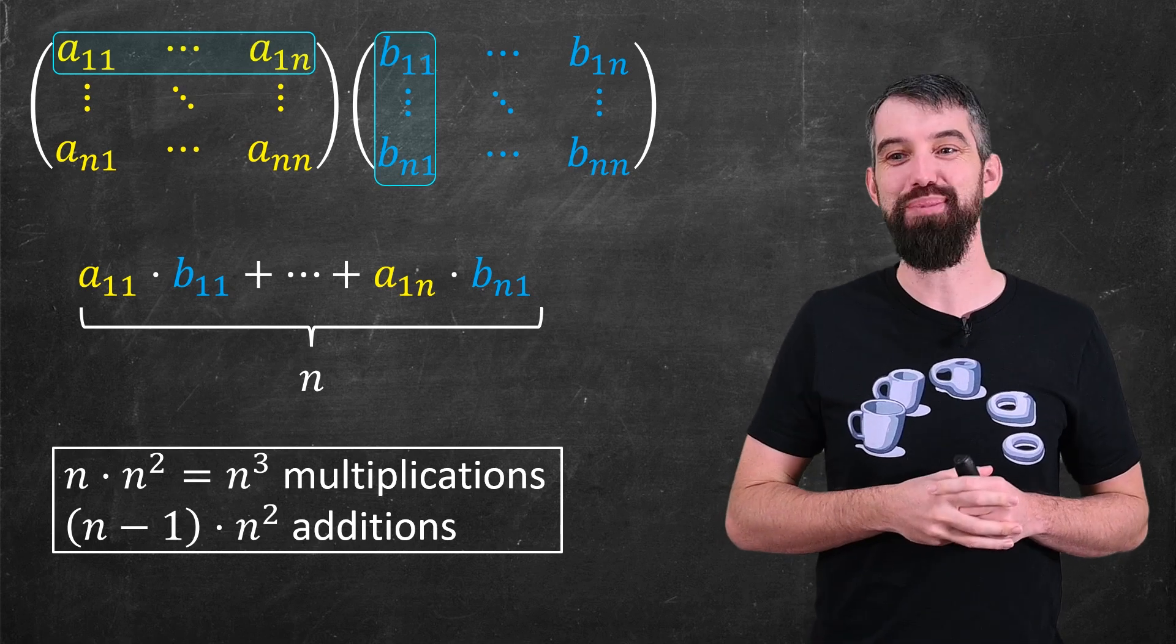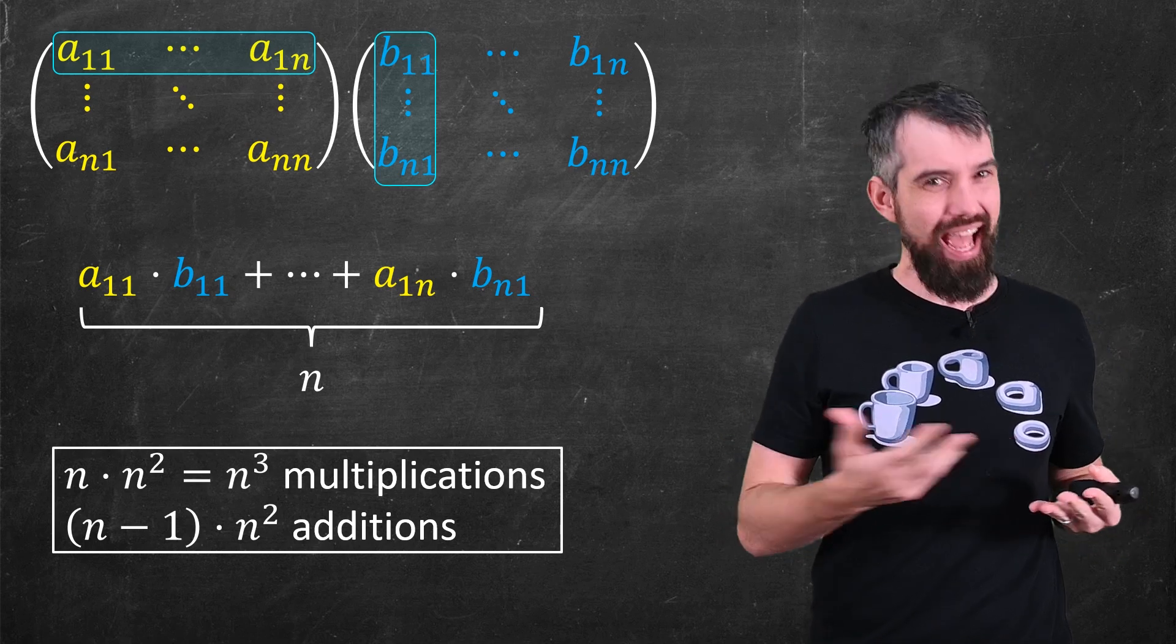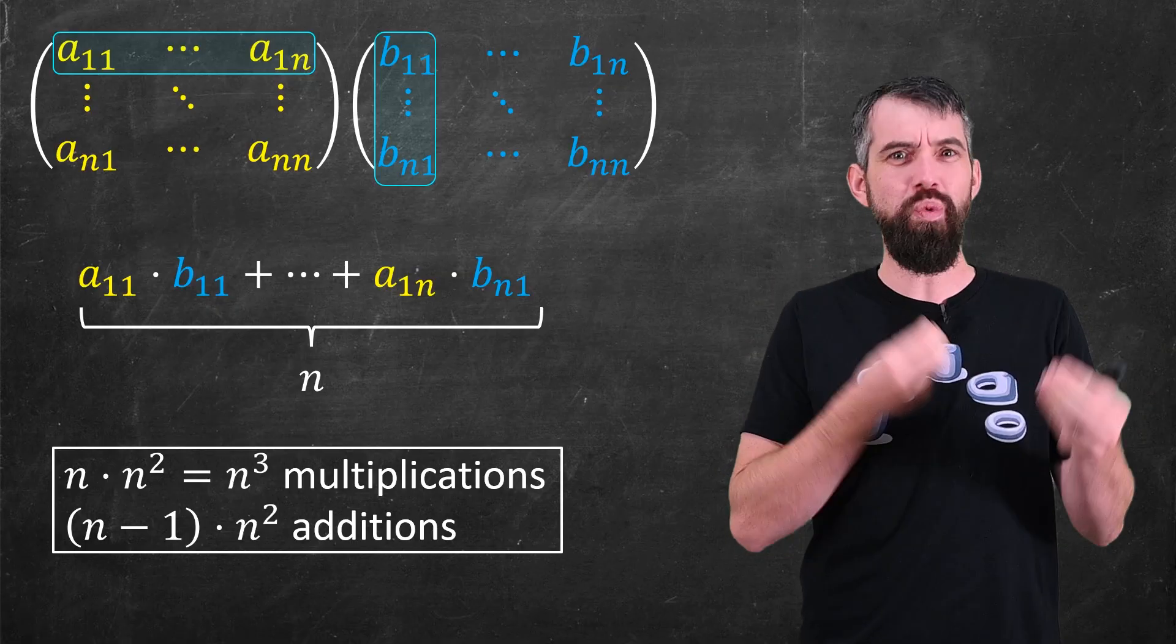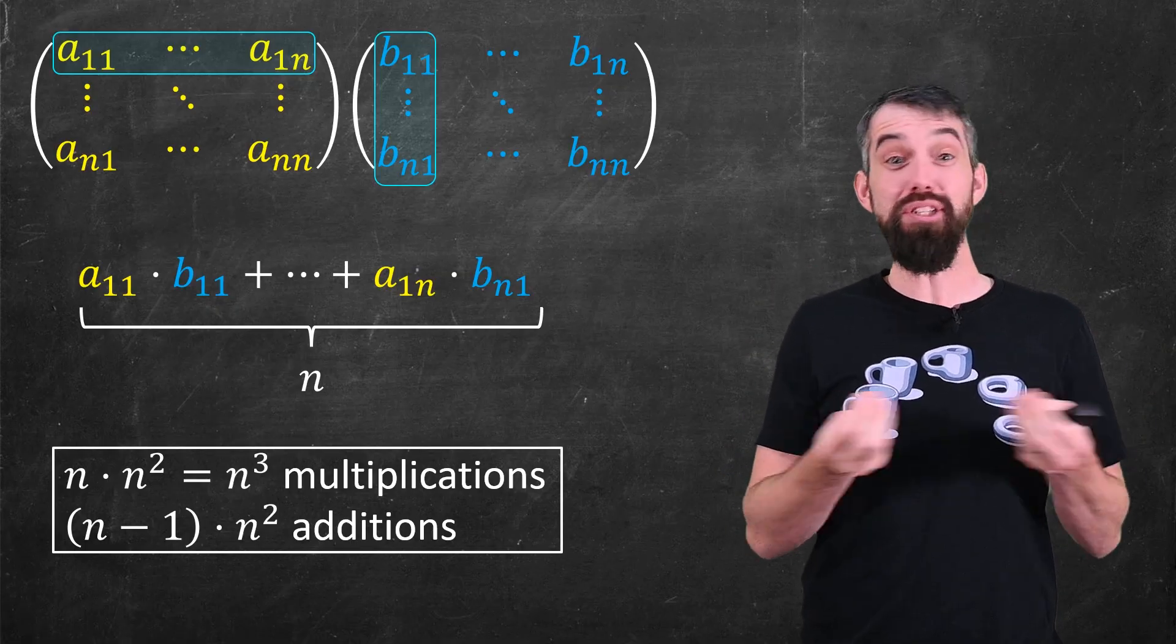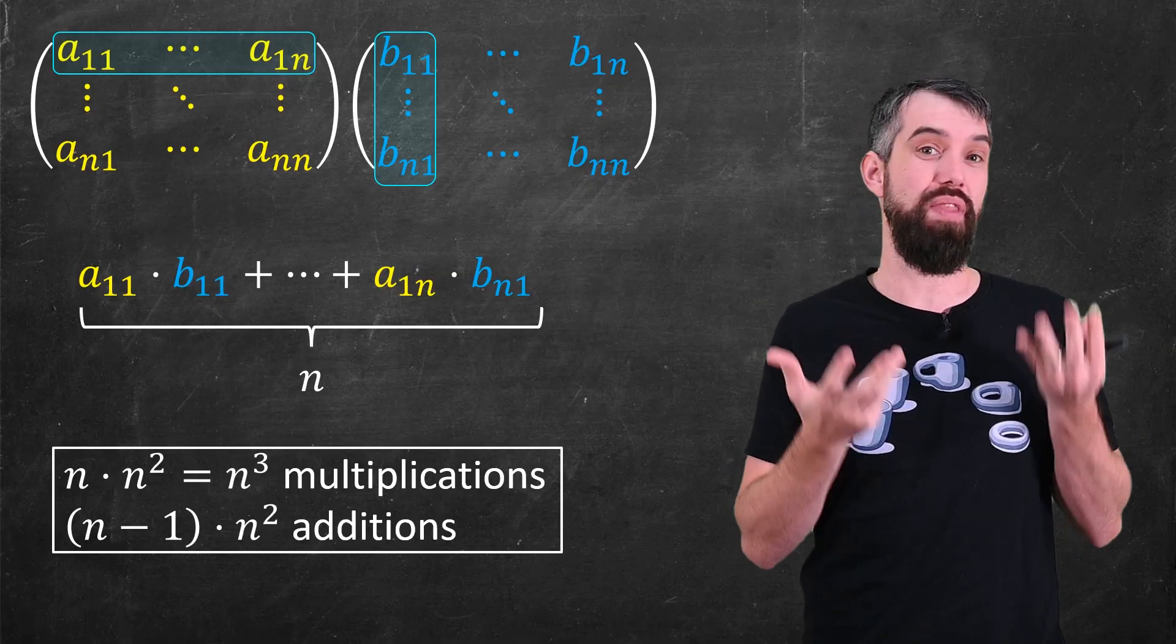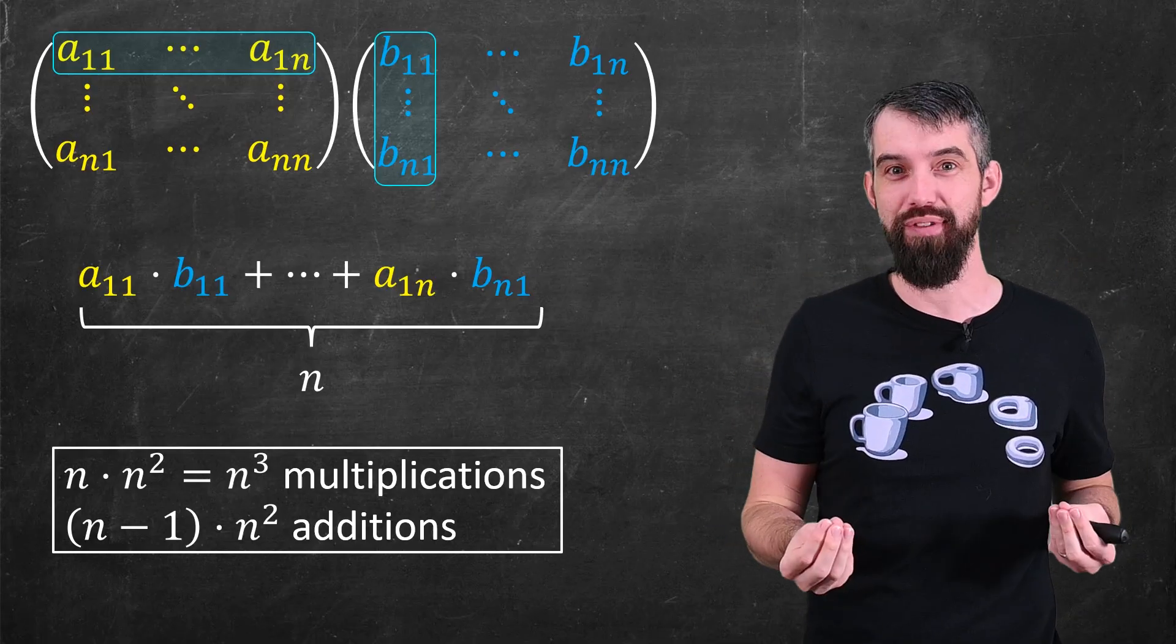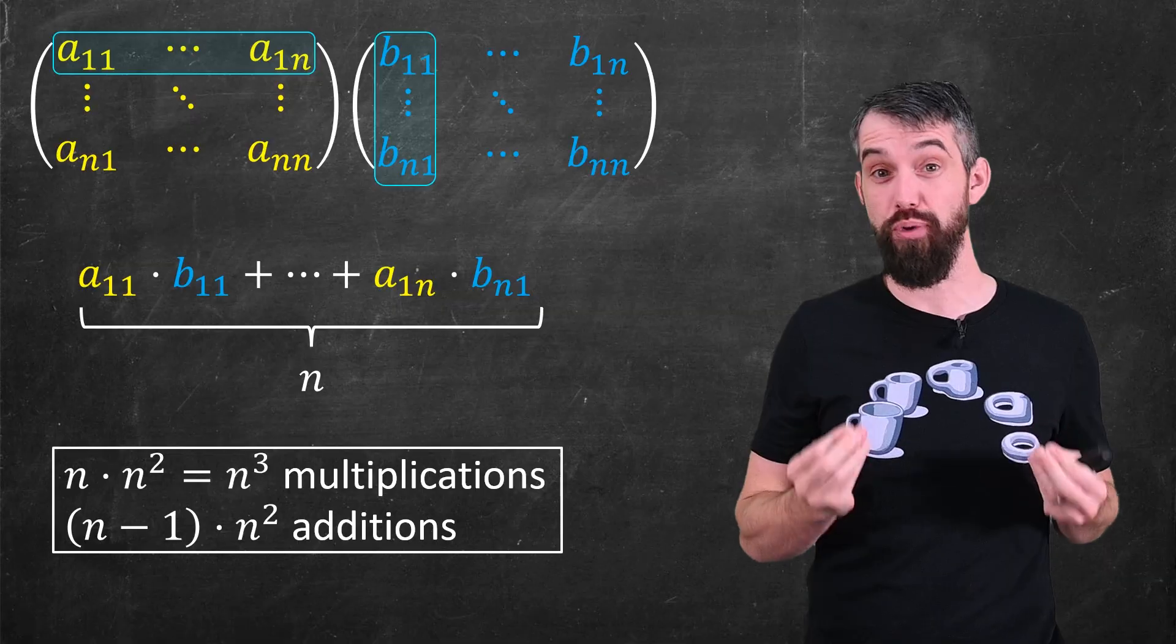I also get n minus 1 times n squared additions, but I'm going to care a lot less about additions, because for really large numbers, computers can do additions way faster than they can do multiplications. So from a computational complexity perspective, multiplications are the things I'm really going to focus on.